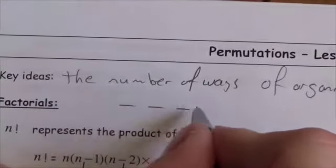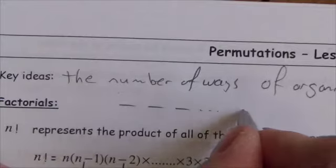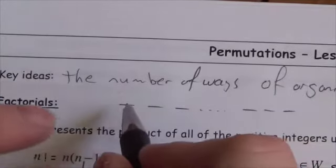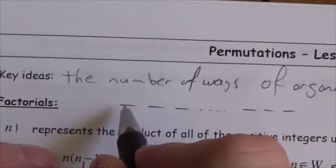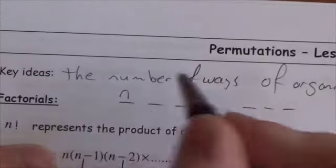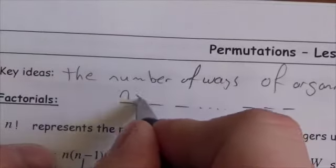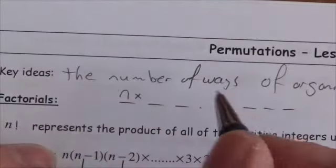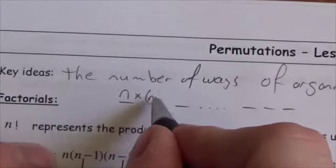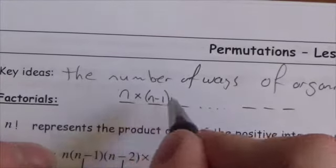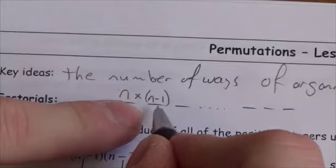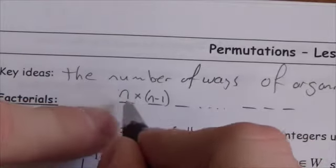You've got positions one, two, three, and all the way down to the last one. How many ways can I choose the first object? Well, there are n ways. Once I've done that, I've lost a choice, so there are now n minus one choices for the second position.